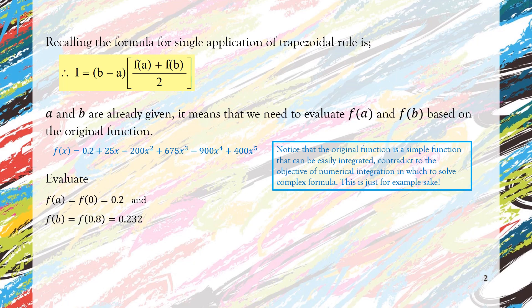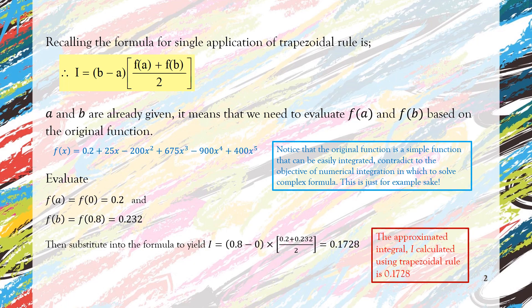Then we substitute all the numbers that we have into the formula and we will get 0.1728. So that value is the approximated integral I, which we calculated using trapezoidal rule single application.